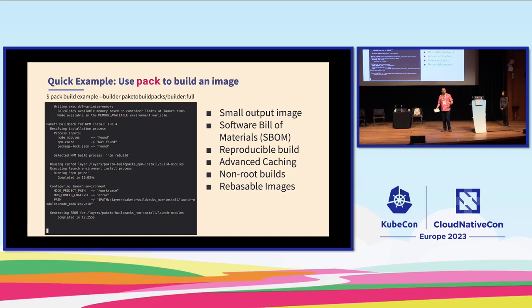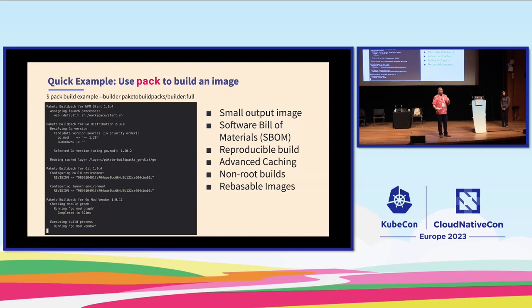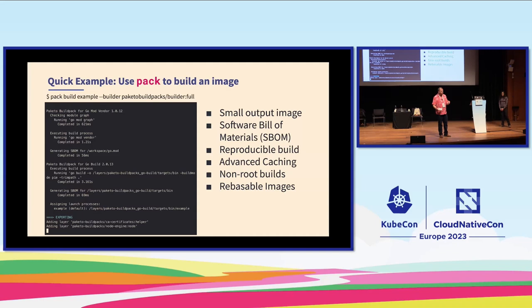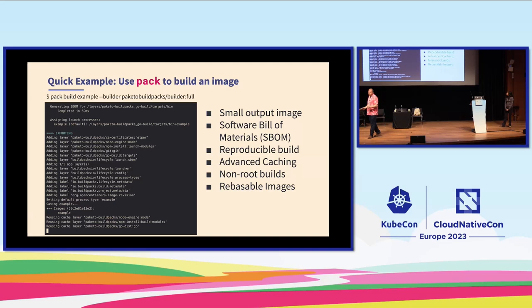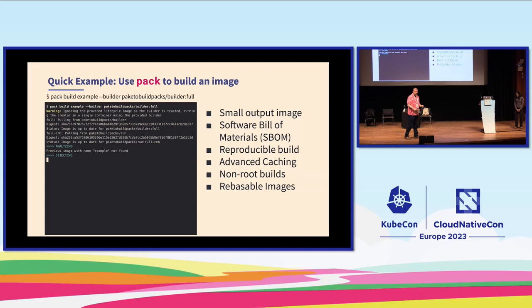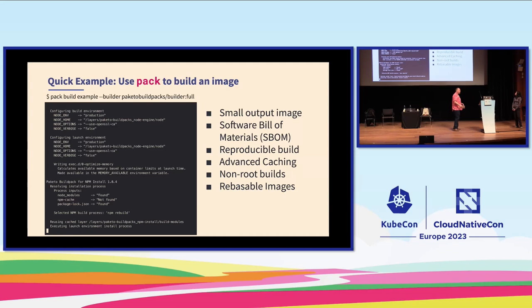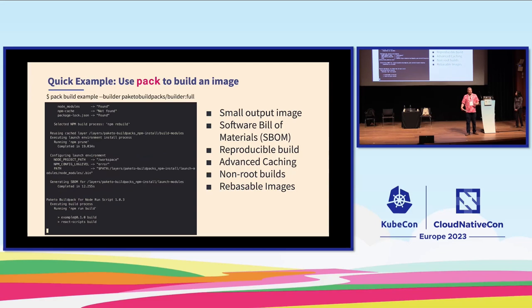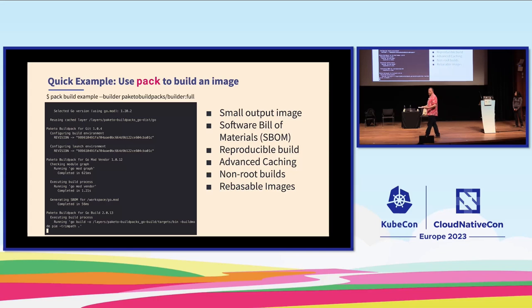The output image is going to be as small as possible, packing only your application's dependencies. The output image will have a full software bill of materials — because we control the build process, we can tell you what version of the Go compiler was used to build your Go application, for example. Interestingly, we have byte-for-byte reproducibility on images: if you build an image and don't change your application's dependencies, and then rebuild, you'll get the exact same image.